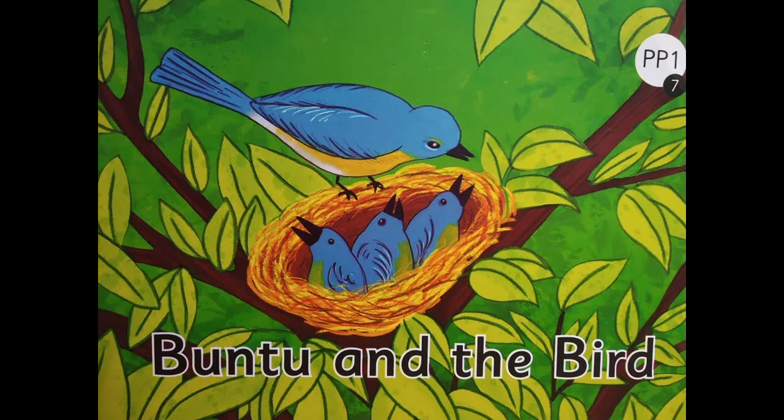The reader is number seven and the name of the story is 'Bantu and the Bird.' Come along, let's begin and have some fun. Now, can you guess what the story is about? I told you the name — I feel the story must be about someone called Bantu and this bird that I can see in the picture.